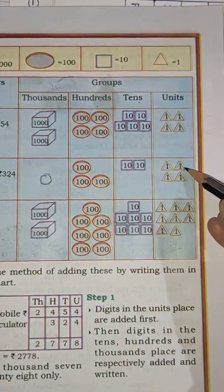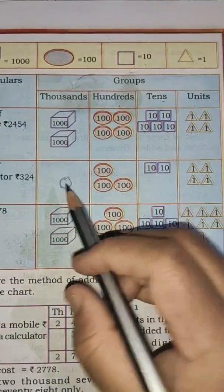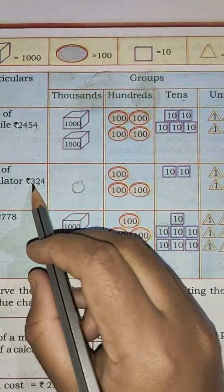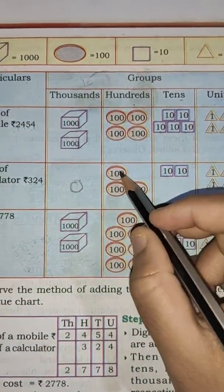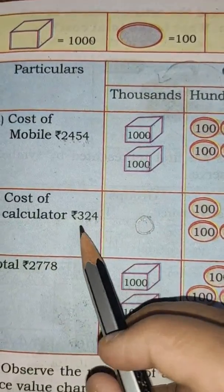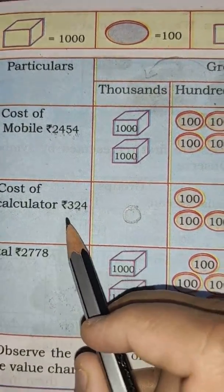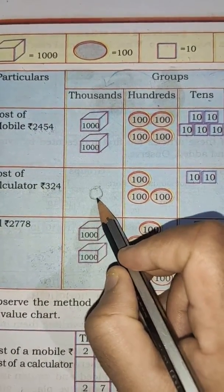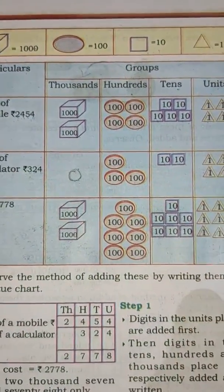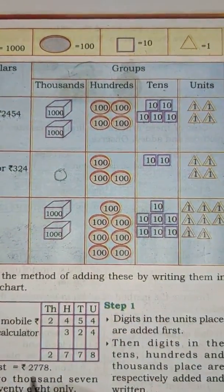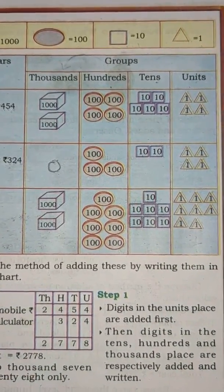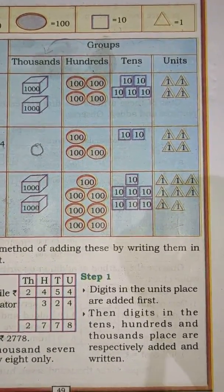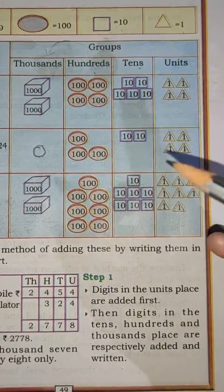So for the calculator, we have 4 units, 2 tens which means 20, and 3 hundreds which is 300. This number has no thousands, so it is considered as 0. Now whenever we are going to add the numbers, we have to start from the unit place. Children, keep this in mind.